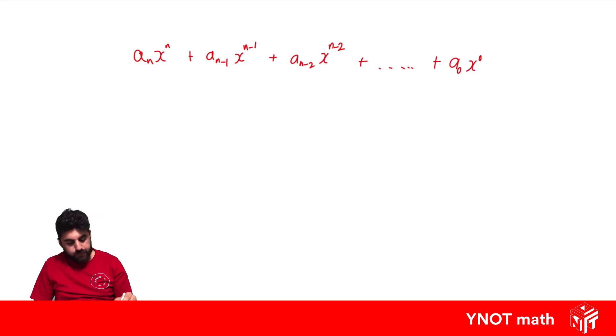So in a polynomial, the term in front of your variable we call the coefficient. So these are our coefficients. And our last term here we call the constant term, because it has no variable, because x to the power of 0 is just going to be 1 there.